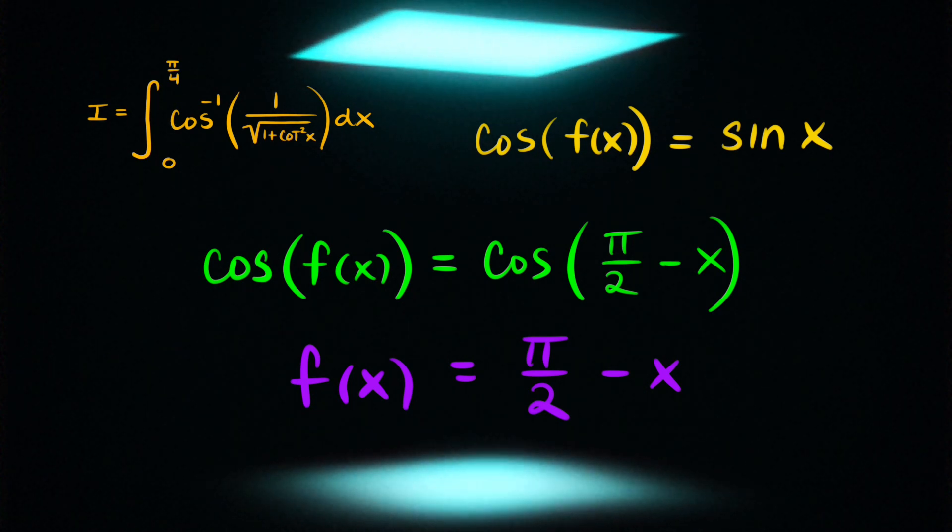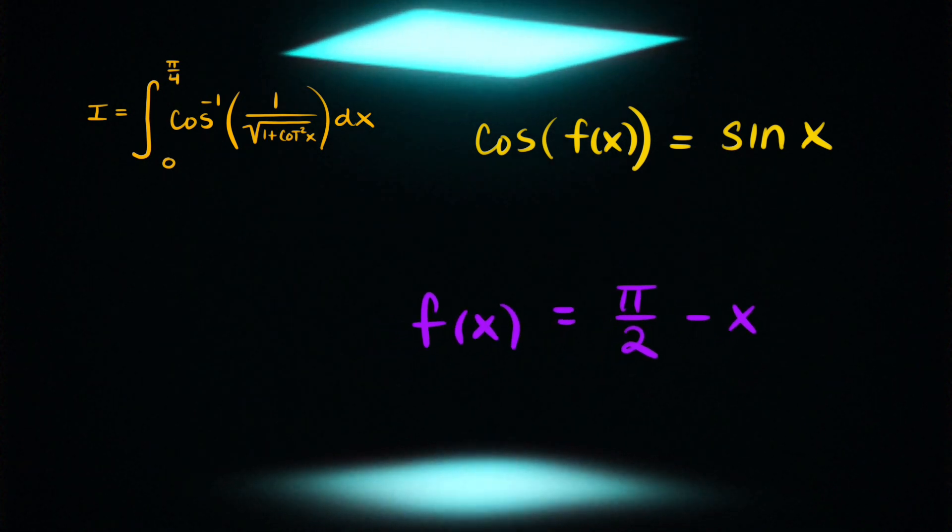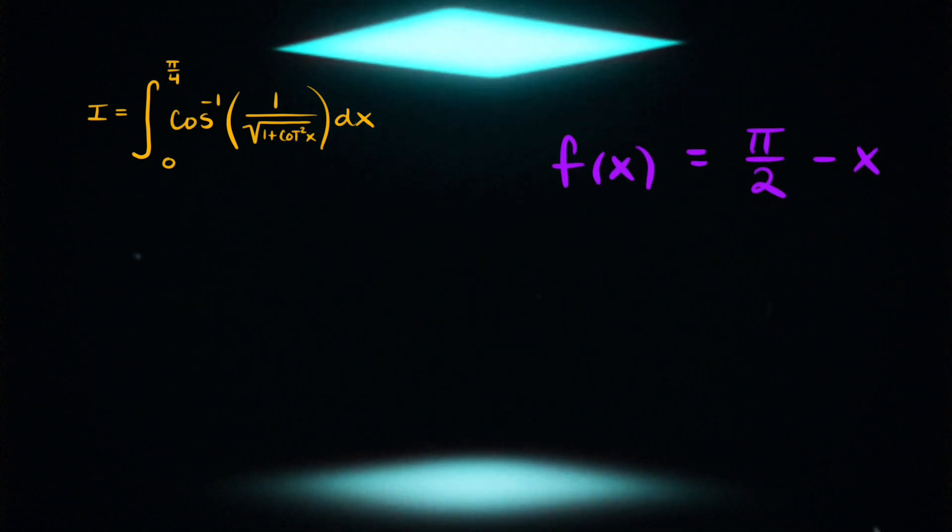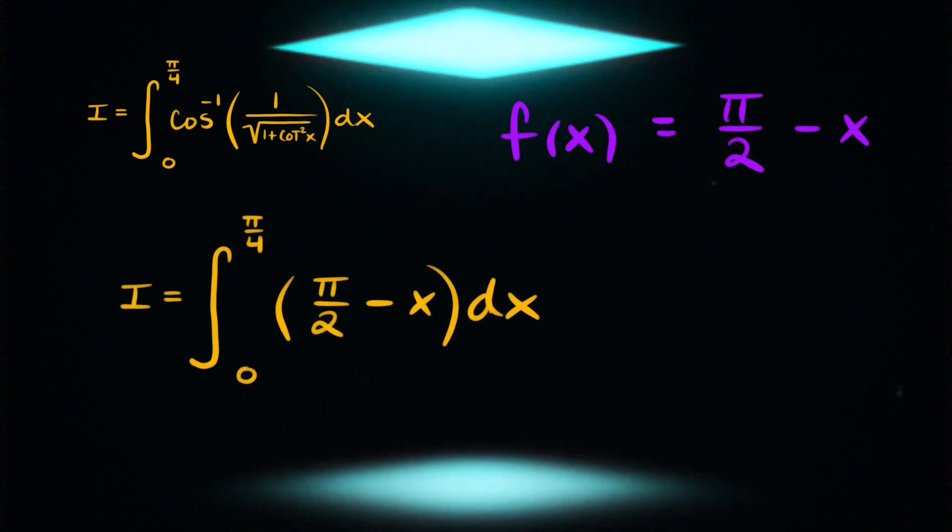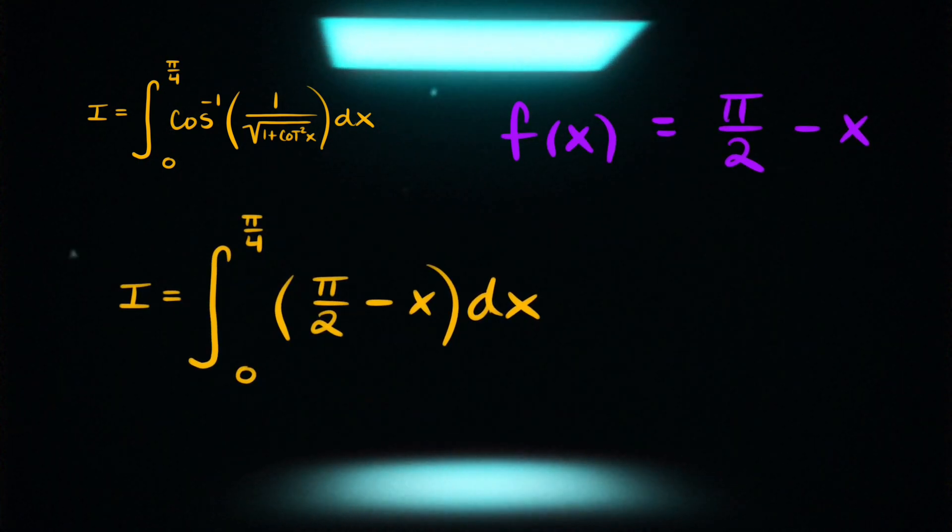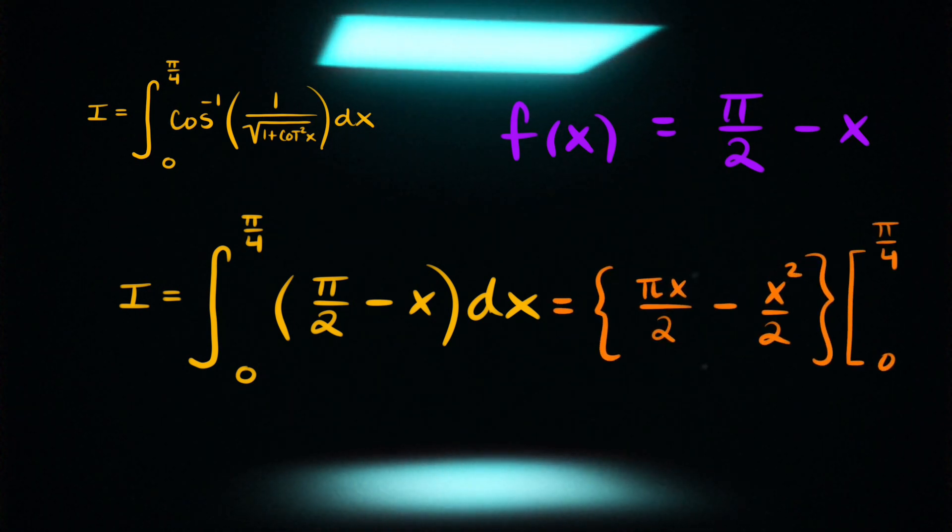That's going to make our integrand much simpler to deal with. So now let's go ahead and make that substitution into our integral. And now it's the integral from 0 to pi over 4 of pi over 2 minus x dx. Something that has a very straightforward antiderivative.